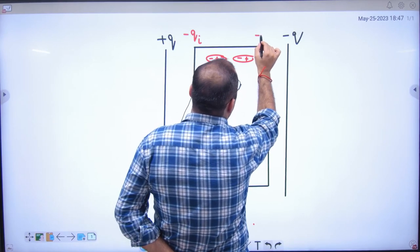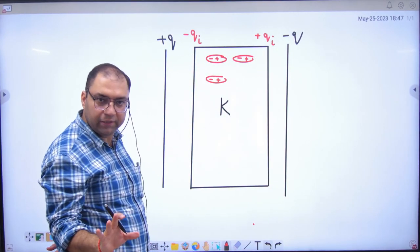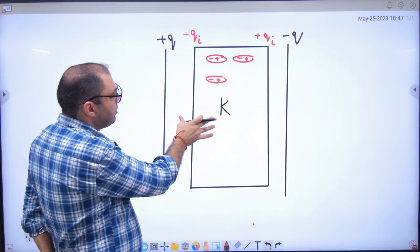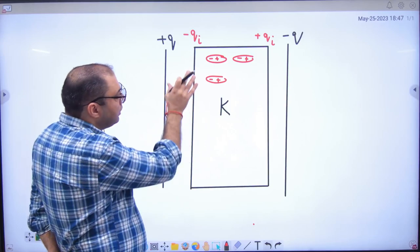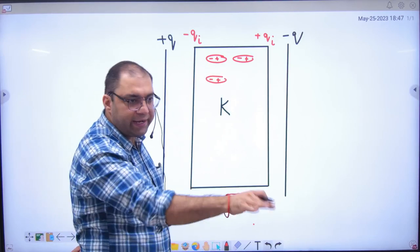So here minus Qᵢ, and here plus Qᵢ. Okay? So these charges are induced or bound charges in dielectric.